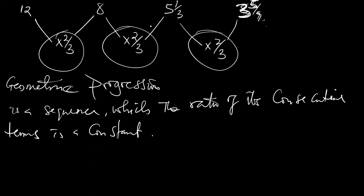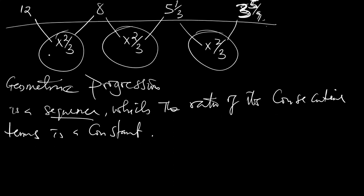Now, geometric progression is a sequence in which the ratio of each consecutive term is a constant. The ratio of each consecutive term gives you 2/3. So 8 over 12 gives you this, and 5 and 1/3 divided by 8 gives you this. The ratio of the consecutive term is a constant.